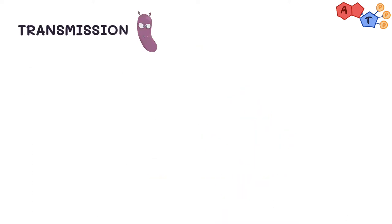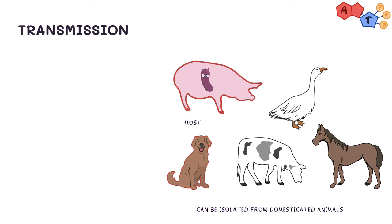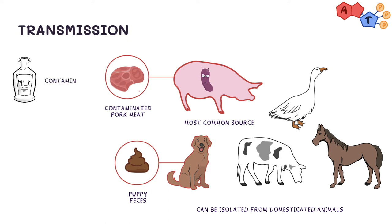Yersinia enterocolitica can be isolated from various domesticated animals, with pigs being the most common source. It is often transmitted from contaminated pork meat or puppy feces, but can also be transmitted by contaminated water and milk. Blood transfusions can also serve as a potential source.